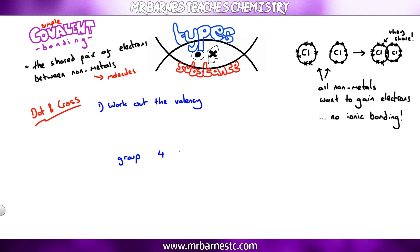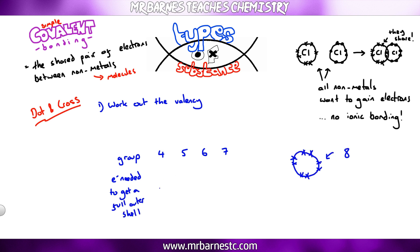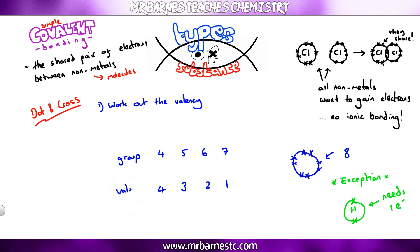To find the valency, look at the groups for elements in groups four, five, six, and seven. Find out the number of electrons needed to get a full outer shell of eight. Group four needs four electrons, group five needs three, group six needs two, and group seven needs one. The only exception is hydrogen — it has one electron in the outer shell but only needs to gain one because that shell holds a maximum of two. The electrons needed to get a full outer shell is the valency — that is the number of bonds an atom can make.